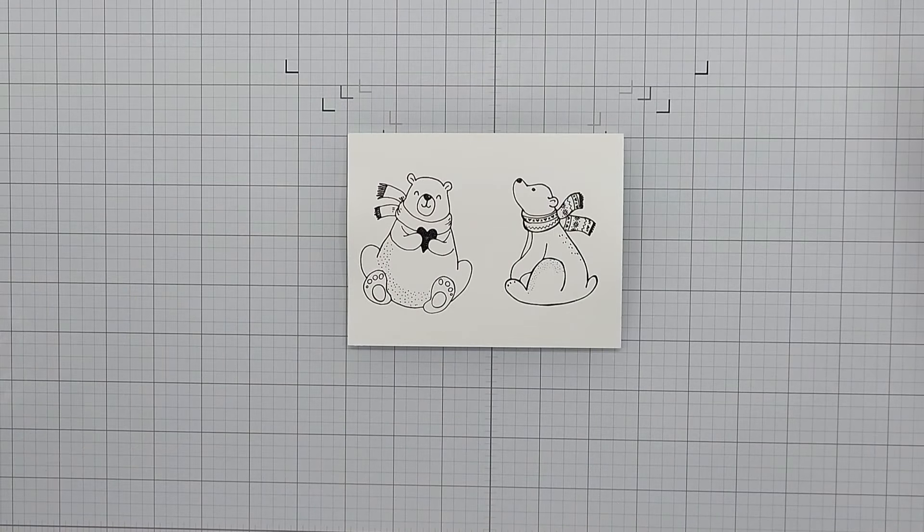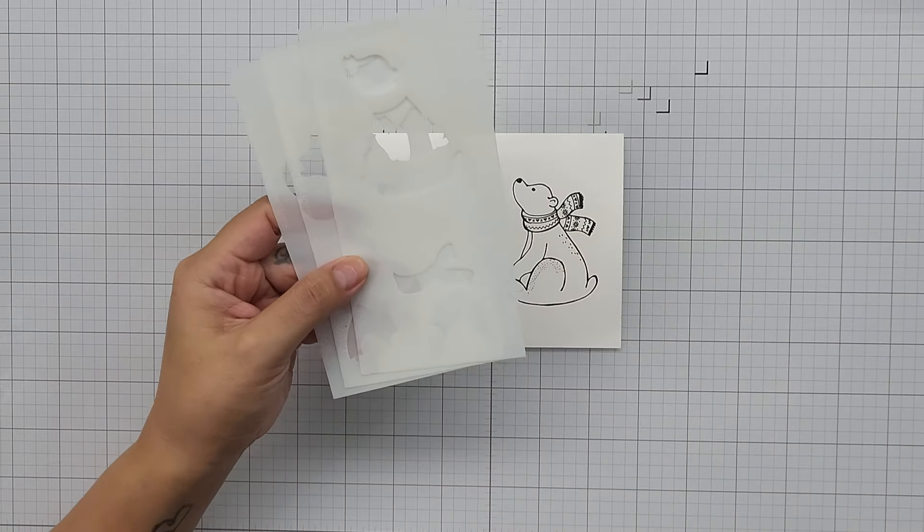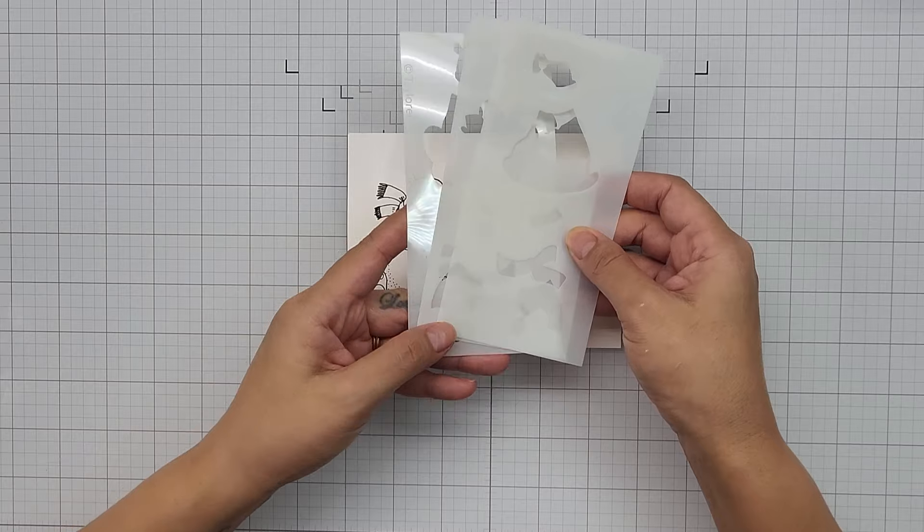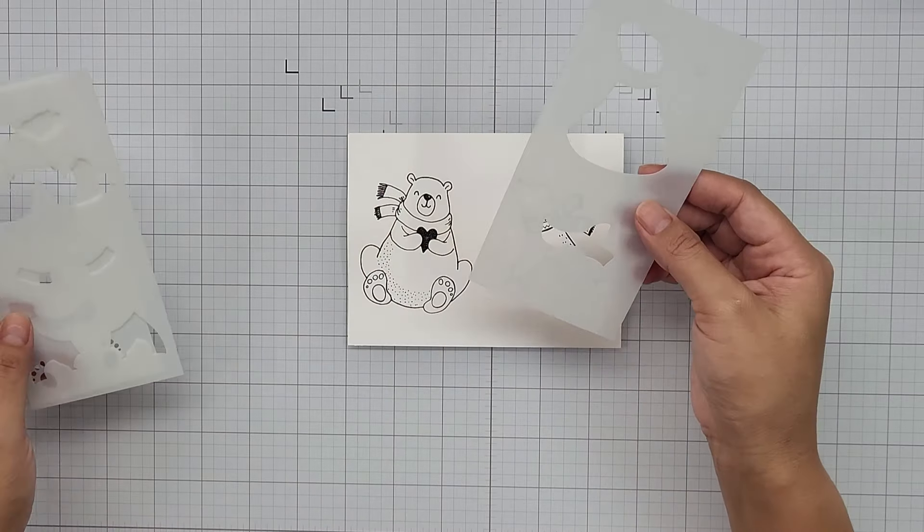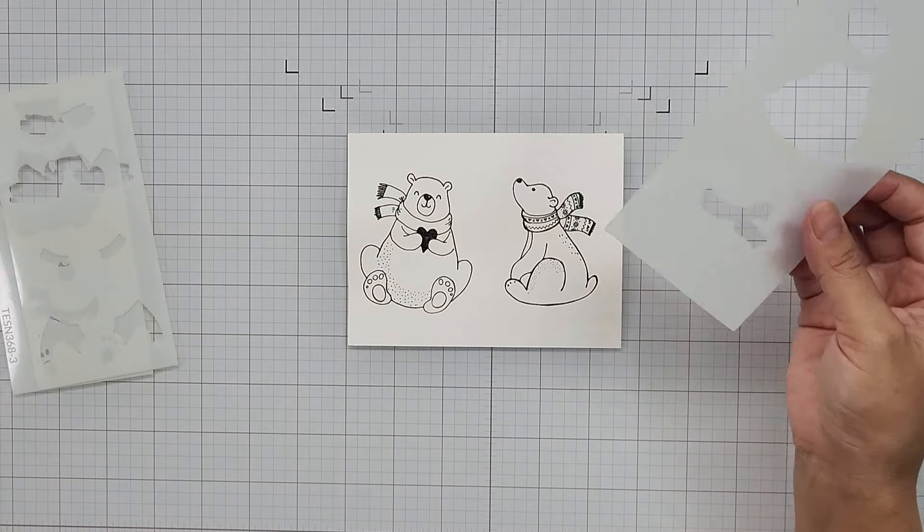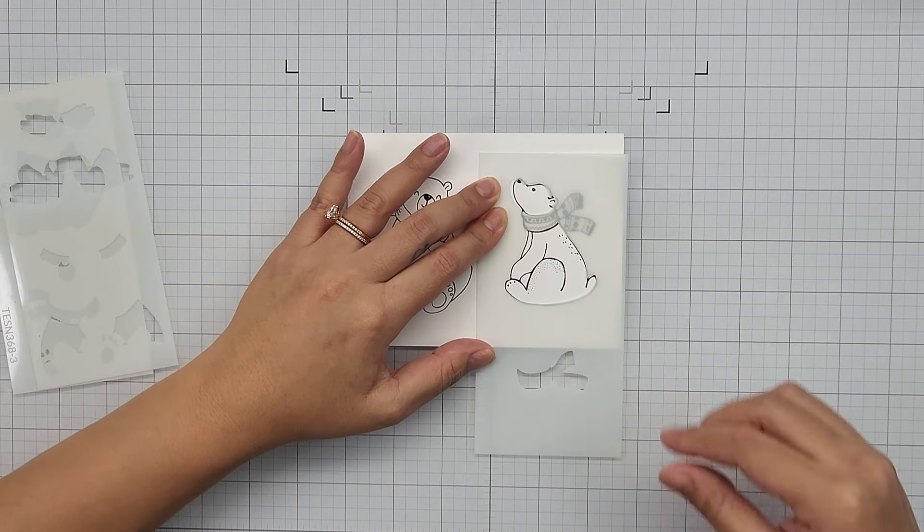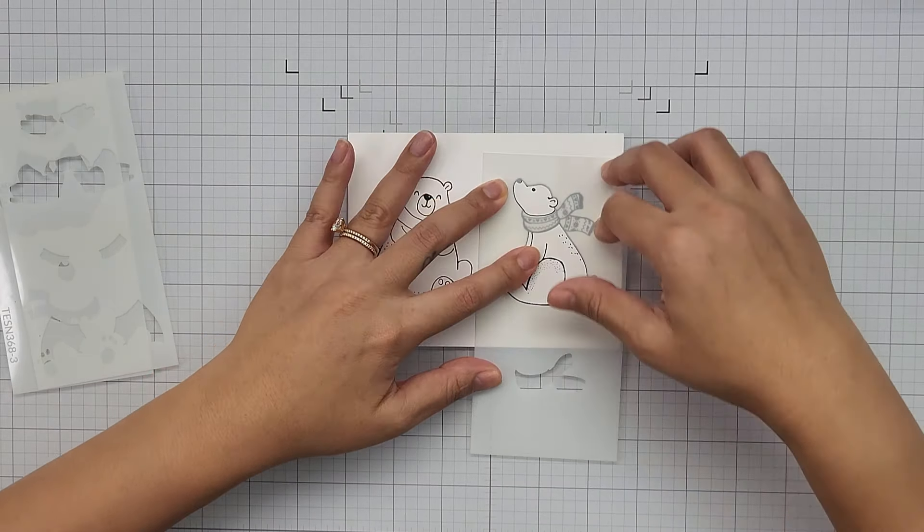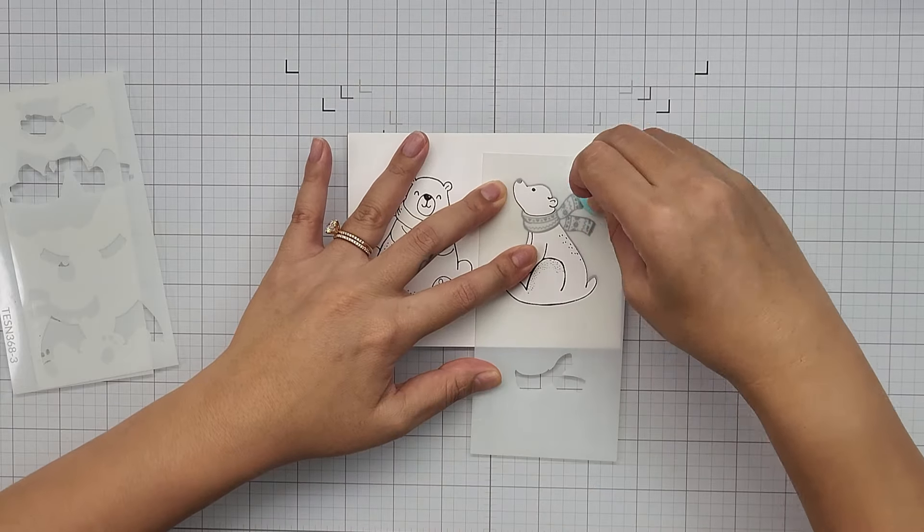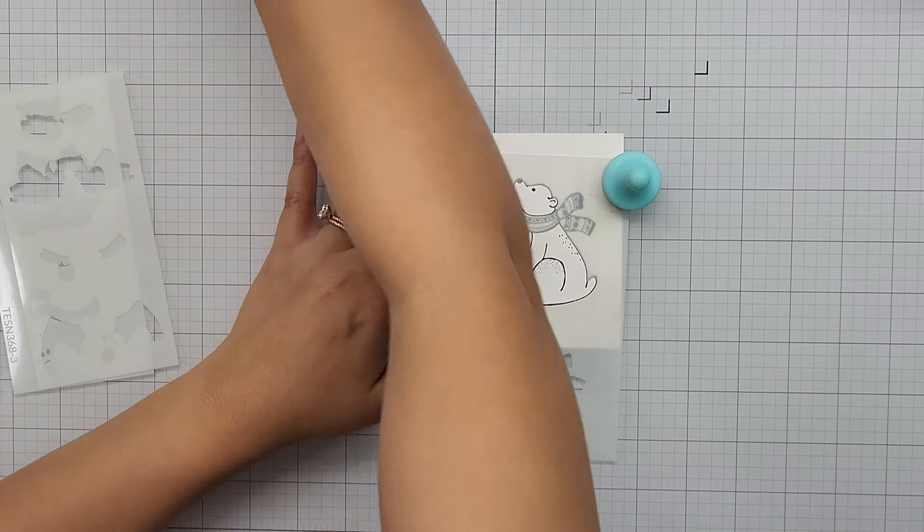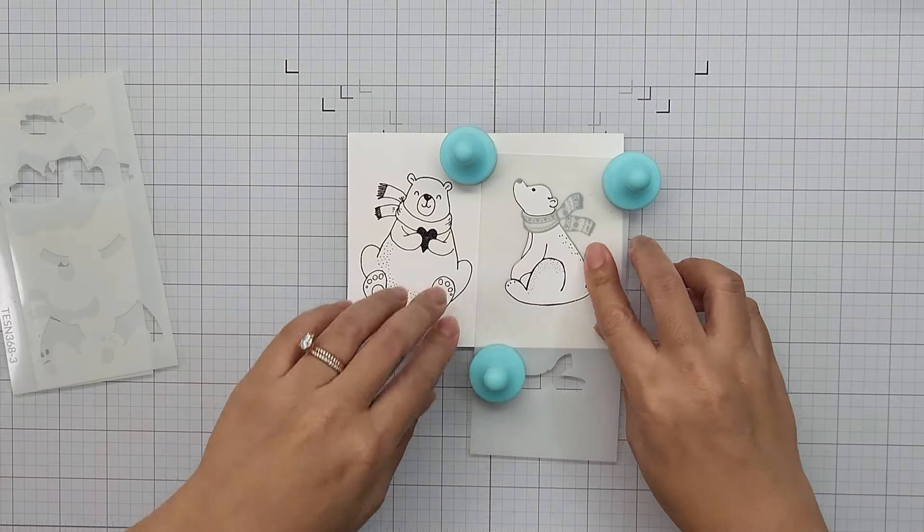Going in with the Bear Hugs coloring stencils, there are three stencils included in this set. Each stencil coordinates with one of the bears from the stamp set. I went ahead and selected the stencil for this adorable bear. I know it's a winter polar bear, but I wanted to also show that you can make it into a brown bear as well. Going in with the first part of the stencil, I am aligning it with the stamped image below.